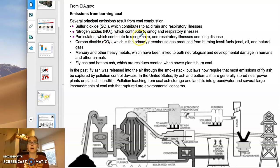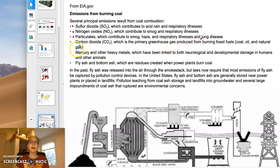Soot can influence air quality by putting tiny bits of dust in the air and affecting the amount of light that passes through. That material can build up in your lungs, causing lung disease and other respiratory problems. And as with burning any carbon-based substance, we're producing a lot of carbon dioxide, which is a greenhouse gas.